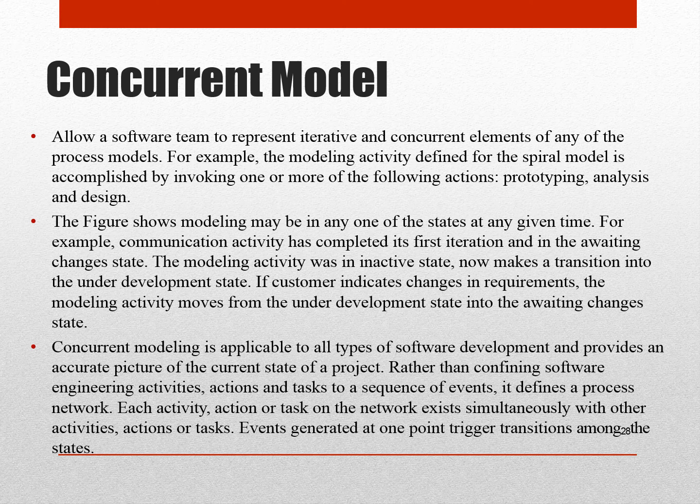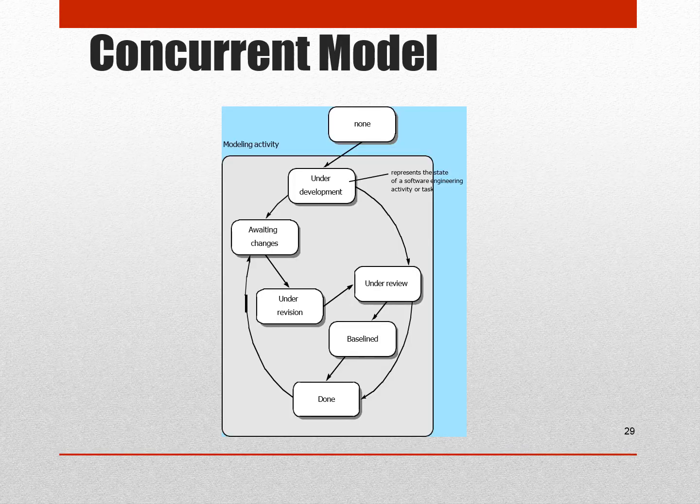Rather than confining software engineering activities, actions, and tasks to a sequence of elements, it defines a process network. Each activity, action, or task on the network exists simultaneously with other activities, actions, and tasks. Events generated at one point trigger transitions among states. This is a well-known example of the flow of the concurrent model.